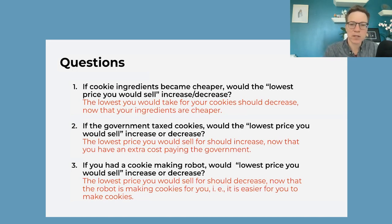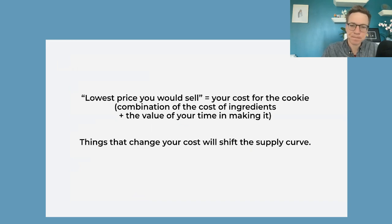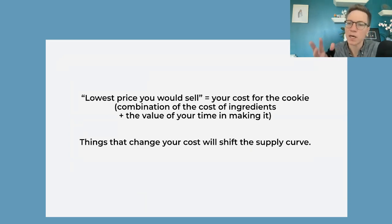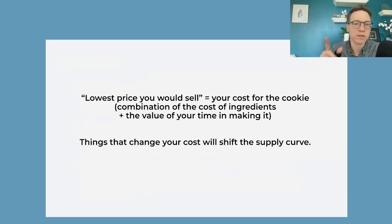Taxes obviously are going to affect your costs, and then also technology — if you got a robot, that's nice. The lowest price you would sell is basically your cost — that's the lowest you would sell that cookie for. It's a combination of the ingredients and your opportunity cost, the value of your time. So things that change that cost will shift the supply curve.